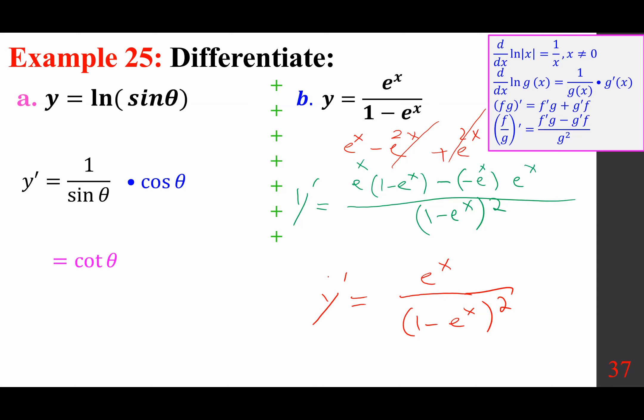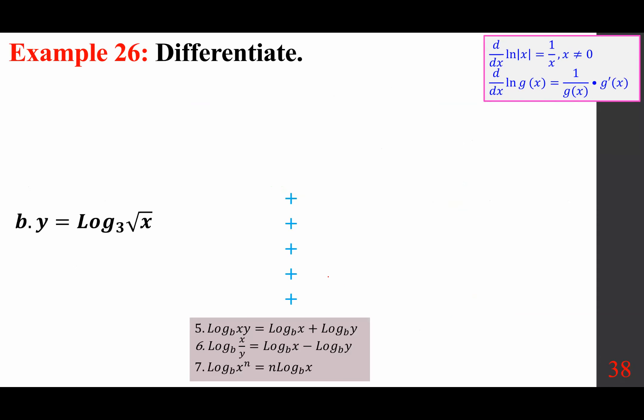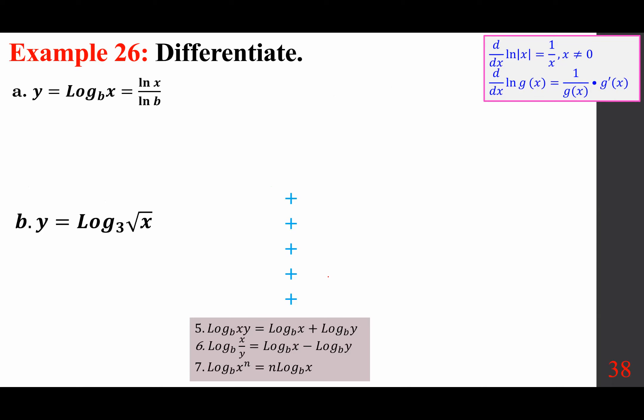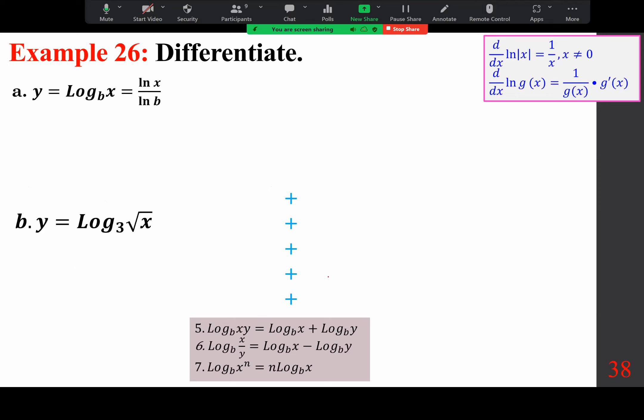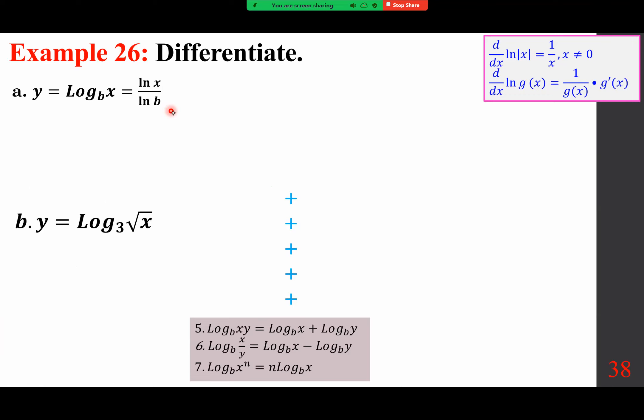We are interested in differentiating y equals log base 3 of square root of x. Whenever we want to differentiate a log with a base different than e, we use logarithmic properties. We apply the change of base formula: this is ln x over ln b, which can be rewritten as 1 over ln b times ln x.